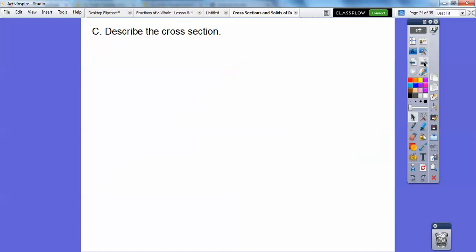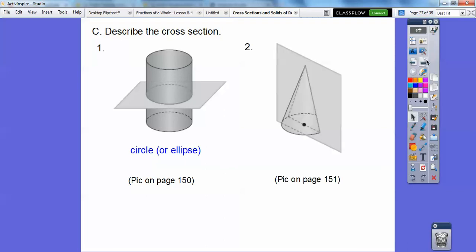Describe the cross section. These pictures are in your textbook. What is this cross section right here? Well, this is so easy. Hopefully you guys see it's a circle. Or an ellipse. It depends on what shape this is. But it certainly is an ellipse if not a circle.